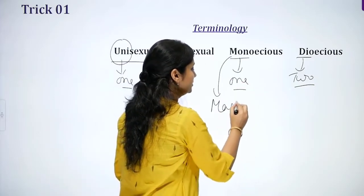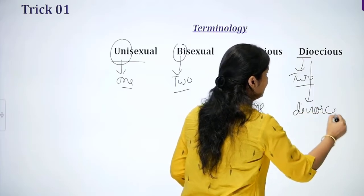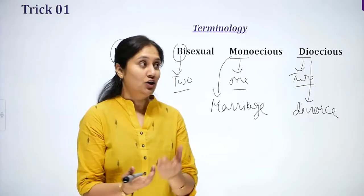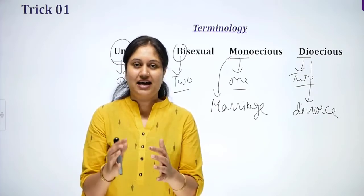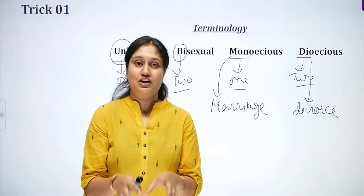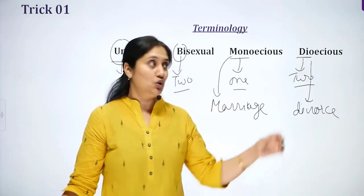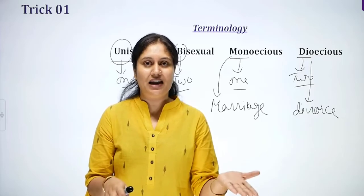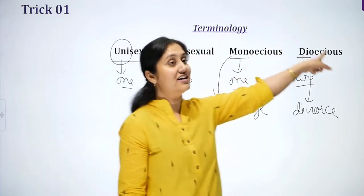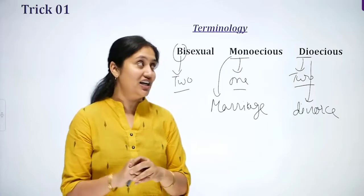M for Marriage, D for Divorce. When marriage happens, two partners — male and female — come together. So monoecious means an organism in which both male and female are present in the same plant — both male and female flowers on the same plant. Dioecious = Divorce: after divorce, male partner and female partner are separate. So dioecious means organisms with either male reproductive part or female. Therefore: unisexual = dioecious, and monoecious = both male and female in the same plant.